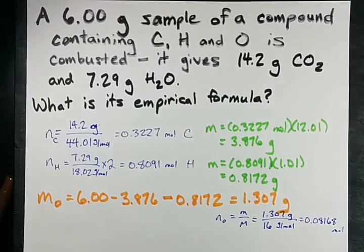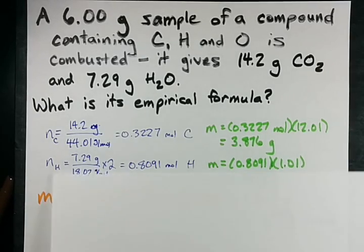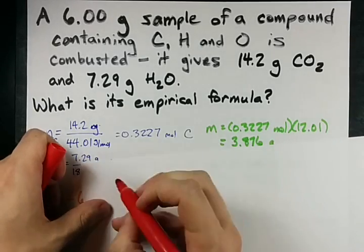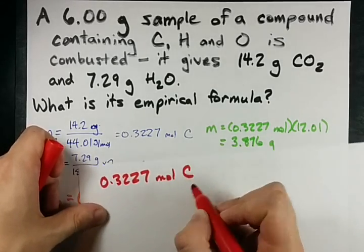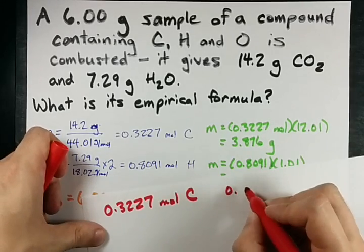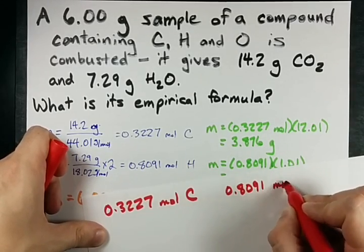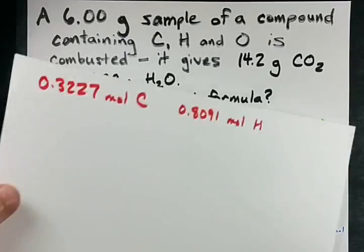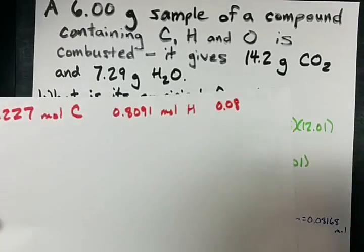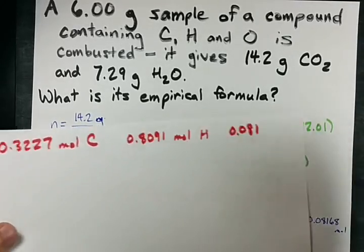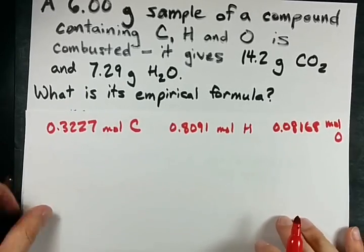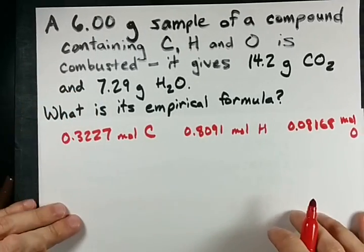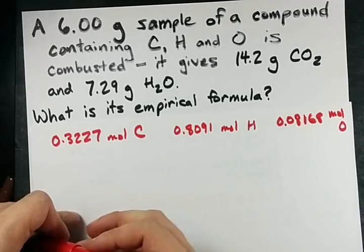Sweet! So now I have the relative molar ratios of all my atoms. Let's recap: 0.3227 moles of carbon, 0.8091 moles of hydrogen, and 0.08168 moles of oxygen. If only I could find the relative molar ratios of these.